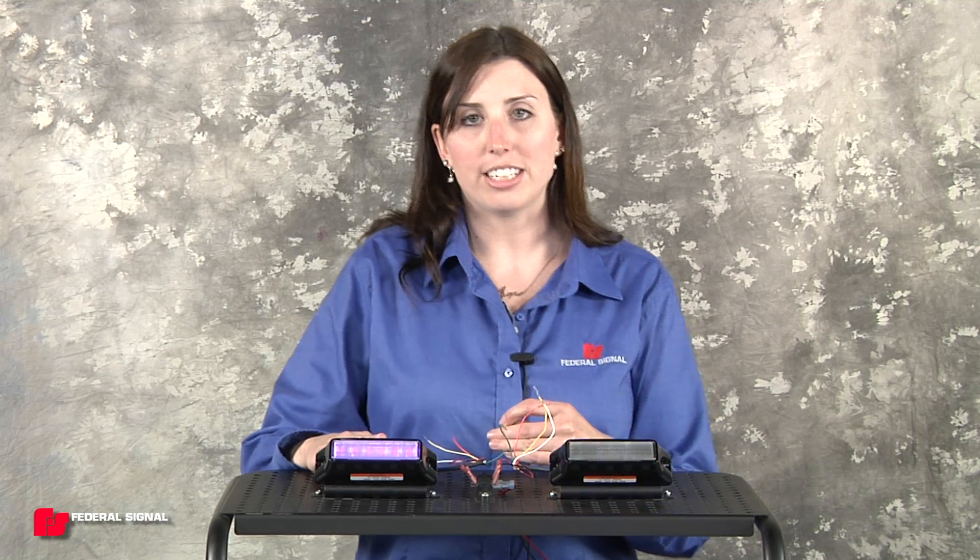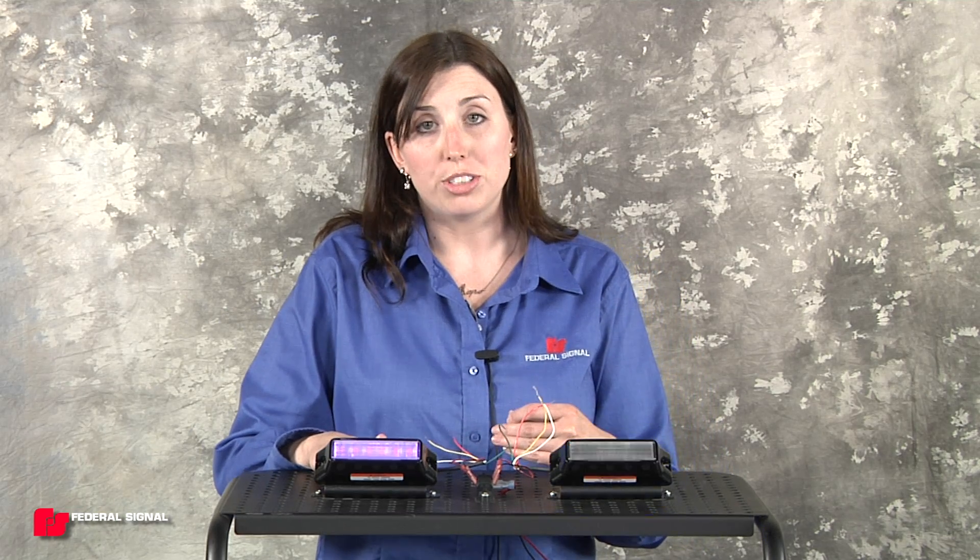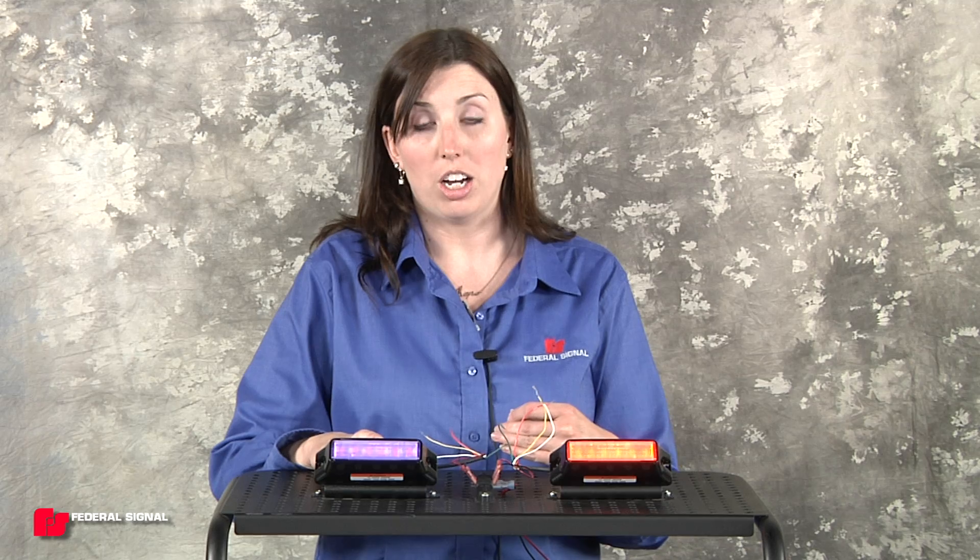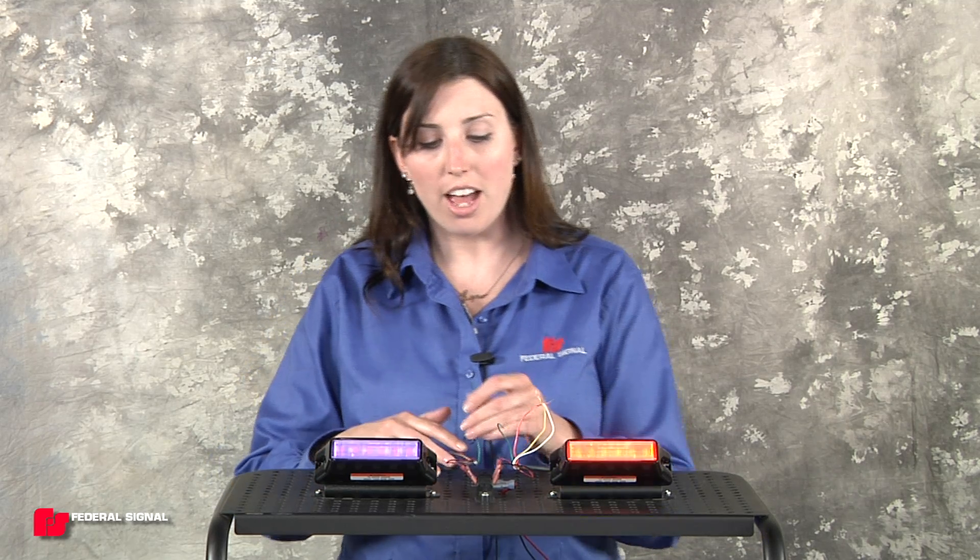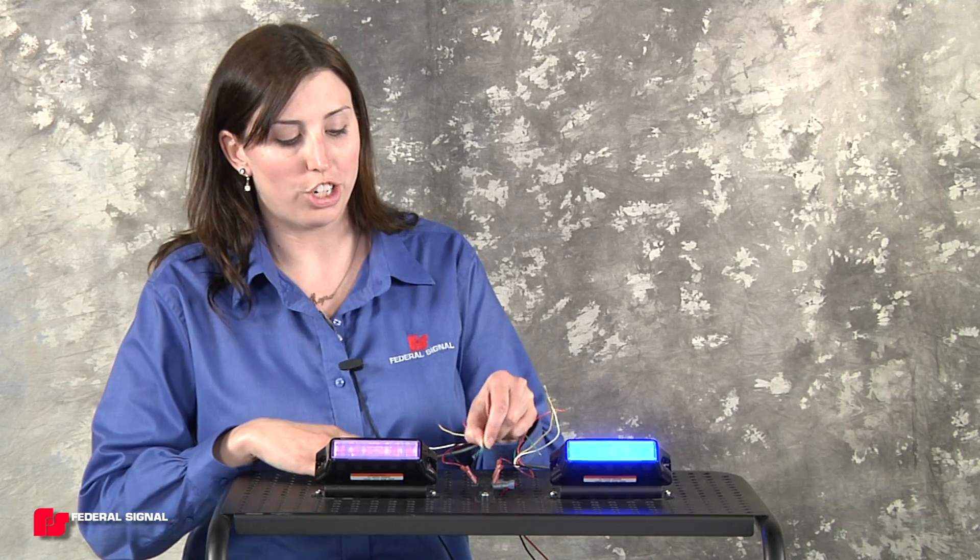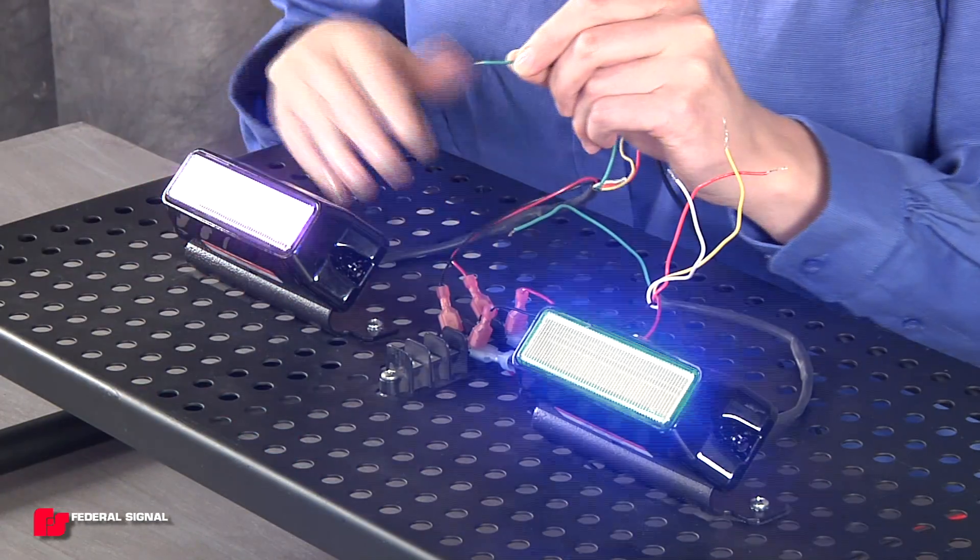Once you have your light set to follower, you can also choose to change the power-up color of the follower light if you'd like it to be different than the controller light. To do that, you would just tap the green wire to ground. The light just flashed red three times, which means the power-up color is now set to red.